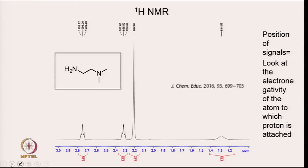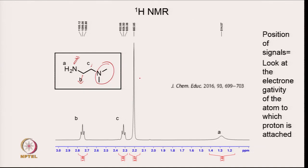You can also look at the position of the signal. For that, you need to consider electronegativity. Protons attached to the electronegative atom should come at the highest chemical shift, while the NCH3 group has less electronegativity than the NCH2 group, so those protons come at a lower chemical shift position. Based on this, you can assign peaks B, C, and D, with A assigned based on chemical shift value.